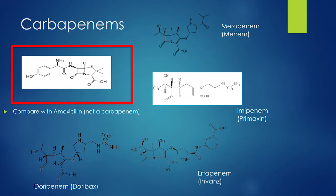These side chains of the carbapenems are designed to pass through the channels and porins of gram-negative bacteria that have outer membranes.